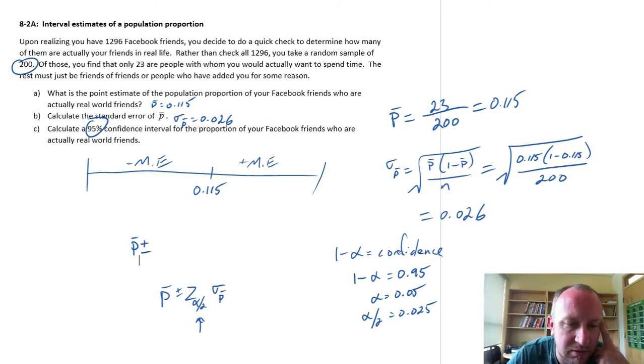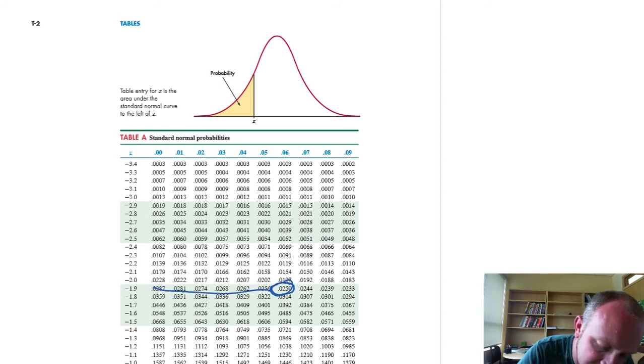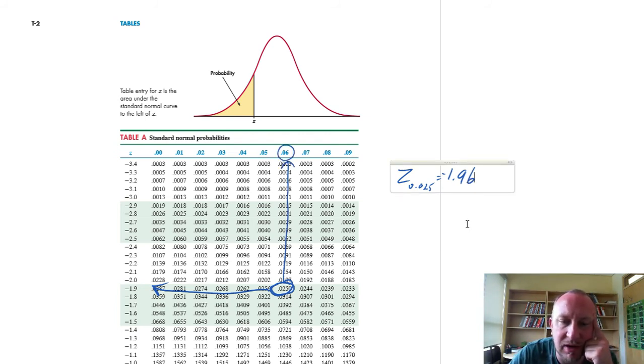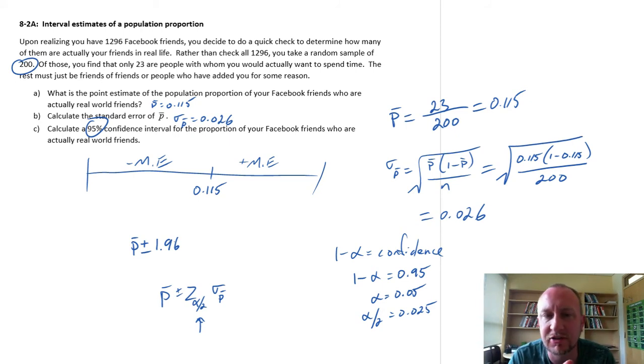So this is going to be P bar plus or minus. Let's go to our Z tables. We've seen this value before. This is a popular one. We look for, here it is 0.025, and that's the value of, so this is Z 0.025, 1.9, and up here 6. So our Z value is 1.96. And this is, of course, plus or minus 1.96, because that Z distribution is symmetric. So that simplifies our calculations a little bit.